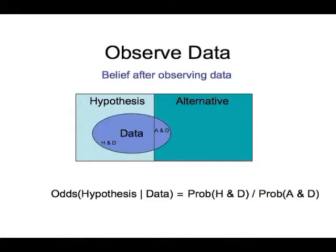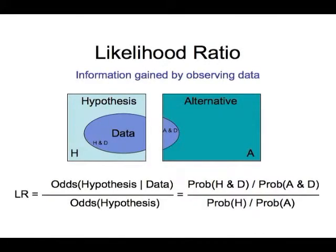That's the odds. Now we observe data, and we want to know what our belief is after observing data. Once we have data, we're now in the blue ellipse. All the stuff outside the blue ellipse is not part of the data we observed, and we must ignore it. The odds of the hypothesis given the data is now the left part of the ellipse divided by the area of the right part of the ellipse — a bigger number, because there's more ellipse on the left. Conceptually, the likelihood ratio is the information gained by observing data.